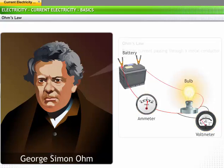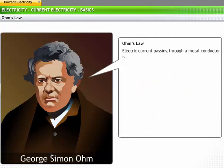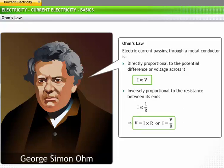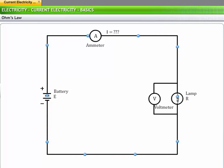Ohm's law states that electric current through a metal conductor in a circuit is directly proportional to the potential difference or voltage across it and inversely proportional to the resistance between its ends. Thus, according to Ohm's law, voltage V is equal to the product of electric current I passing through the conductor and the resistance R offered by it.